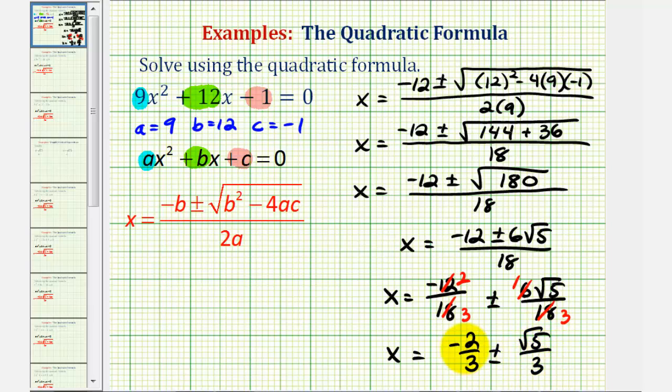Remember, this represents two solutions. One solution is negative two thirds plus square root of five over three. The other solution is negative two thirds minus square root of five over three.